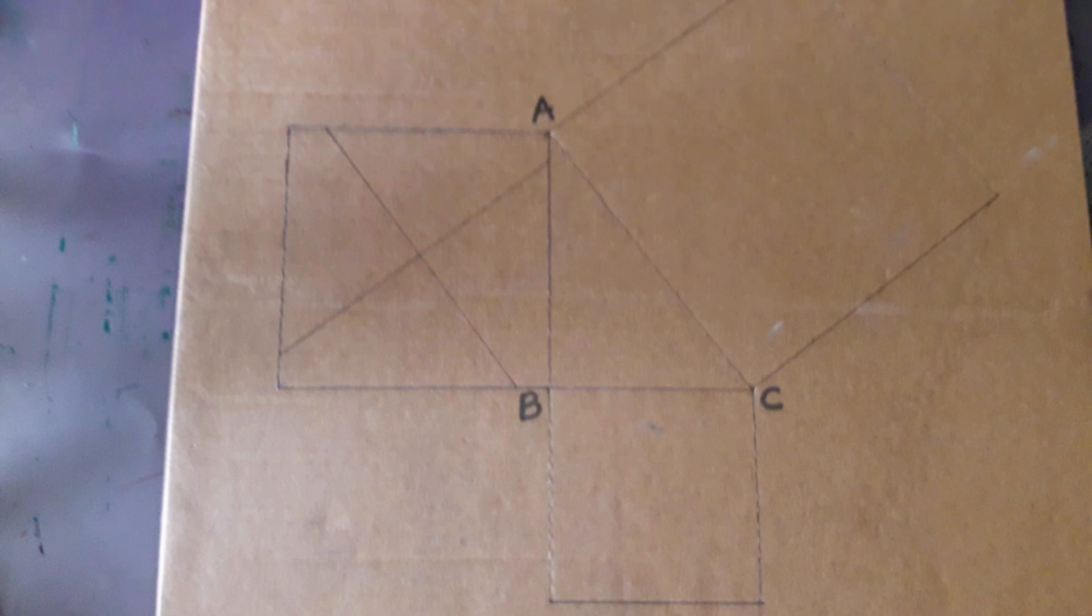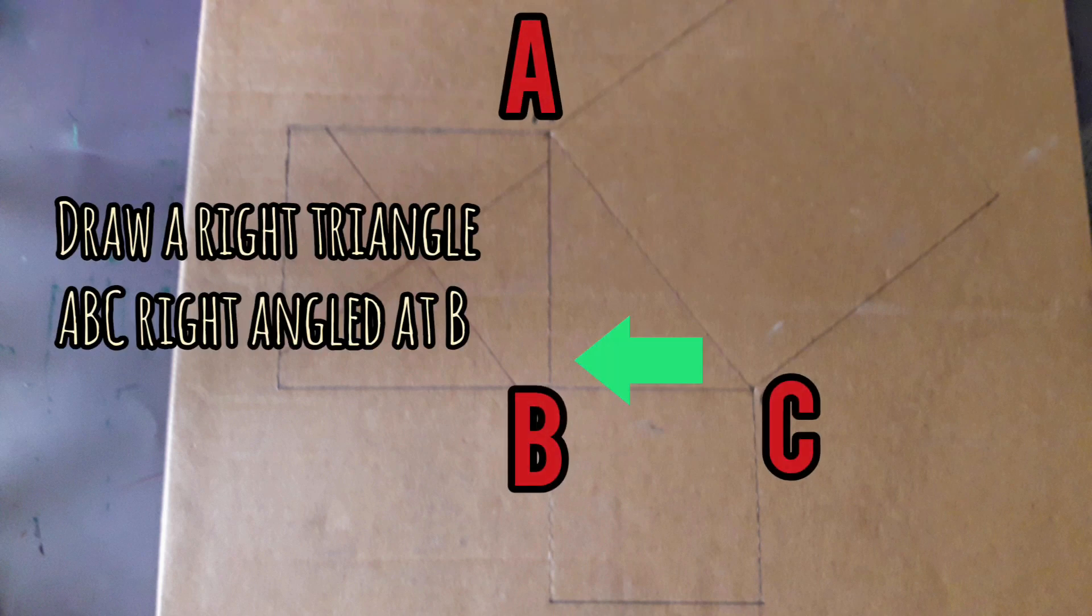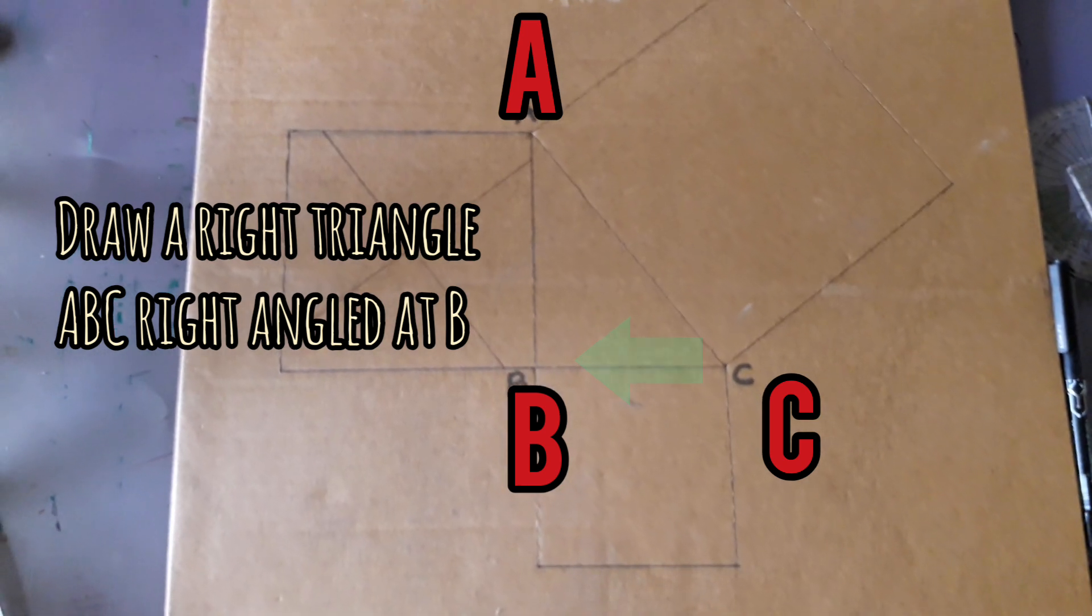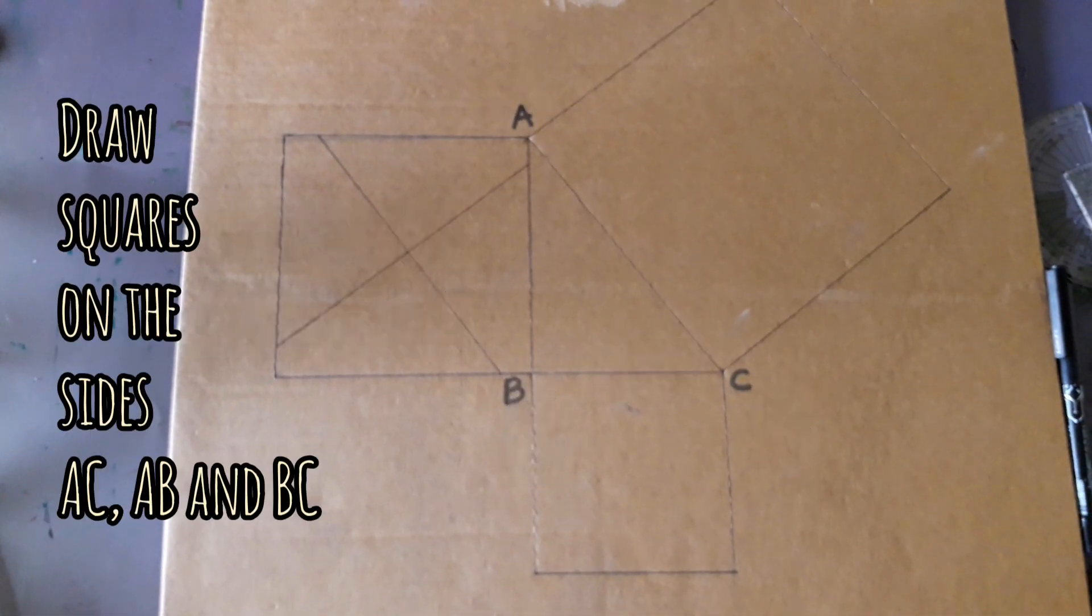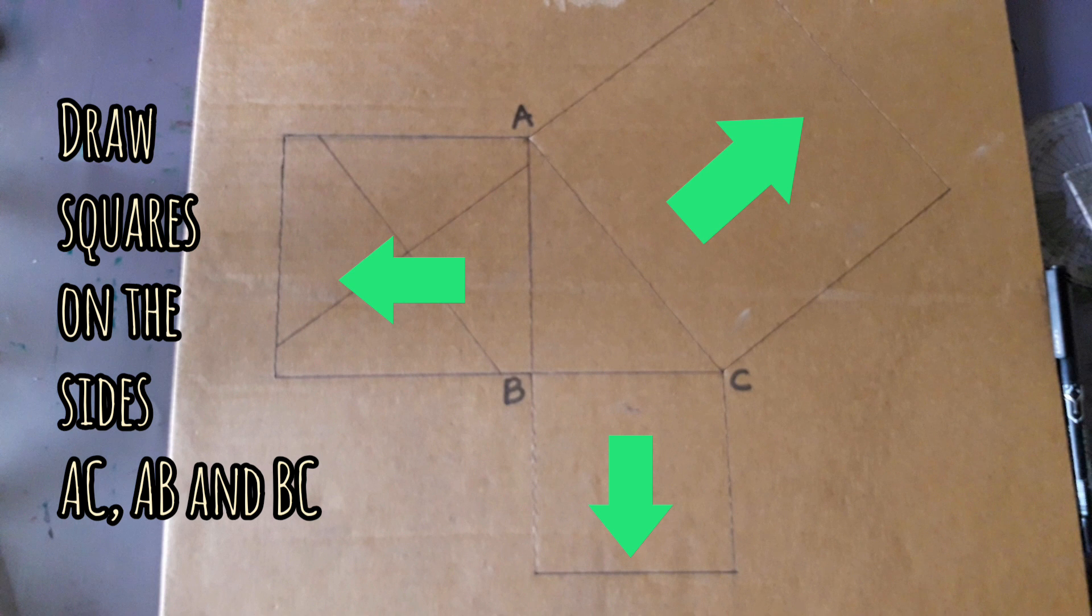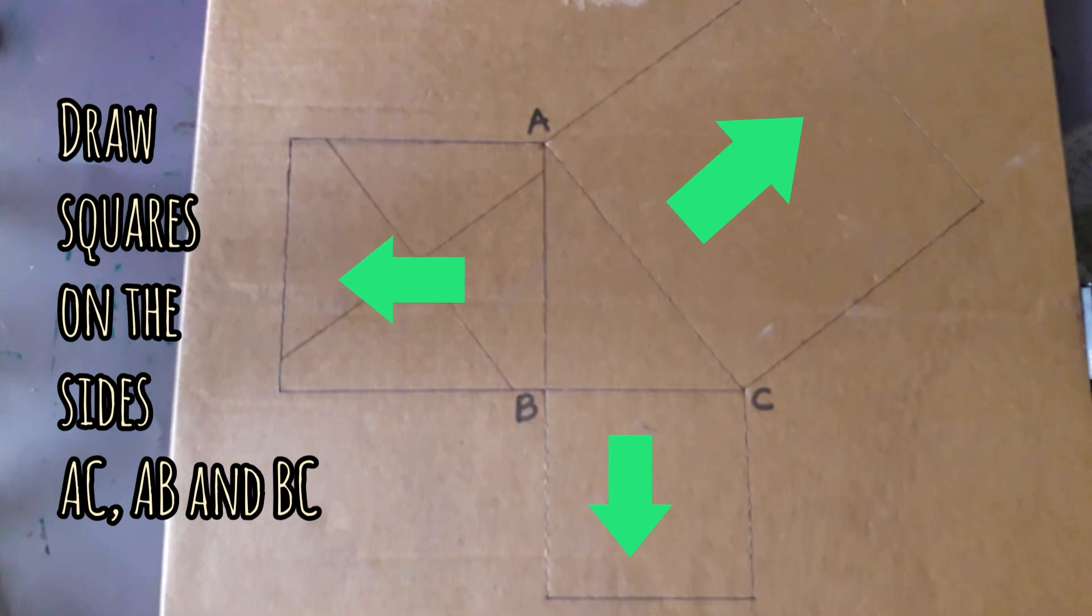Take a square board, draw a right triangle ABC right angle at B. Draw squares on the sides AC, AB, and BC.